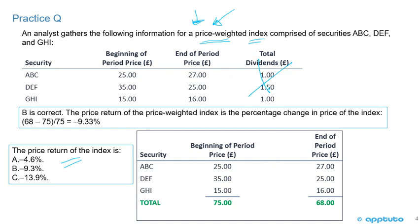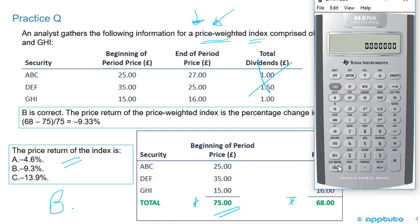We don't need the dividends at all here — that's red herring information. We would need them if calculating total return. For a price-weighted index calculating price return, we simply sum the beginning prices: 25 + 35 + 15 = 75, and the ending prices: 27 + 25 + 16 = 68. The return is (68 − 75) / 75 = −9.33%, so the correct answer is B.